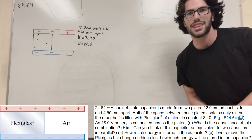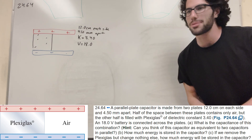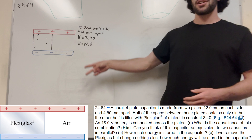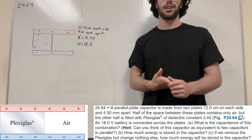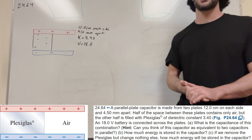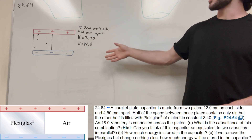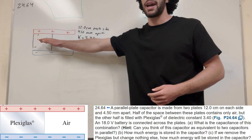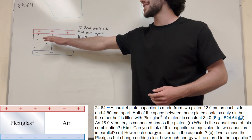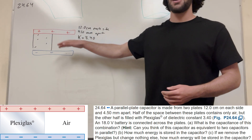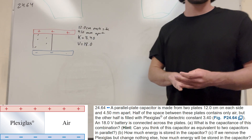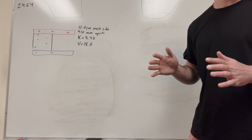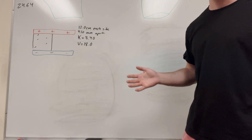What's up, Cal gang? Alright, so we got this dielectric problem here. We have this parallel plate capacitor, and we have all these constants. What's happening is half of it is filled up with plexiglass, and the other half is just air. The first question is to find the capacitance of this combination.